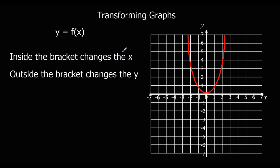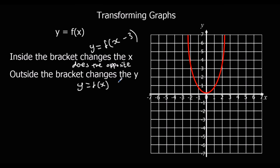There are two types of changes. It can be inside the bracket — for example, y equals f(x minus 3). Inside the bracket changes the x-axis, and it does the opposite. So if it says minus 3, you have to plus 3 to the x values. Outside the bracket — for example, y equals f(x) minus 3 — that changes the y, and it does as it says. So this will move the y values down 3. Inside the bracket changes x and does the opposite; outside the bracket changes y and does what it's told.